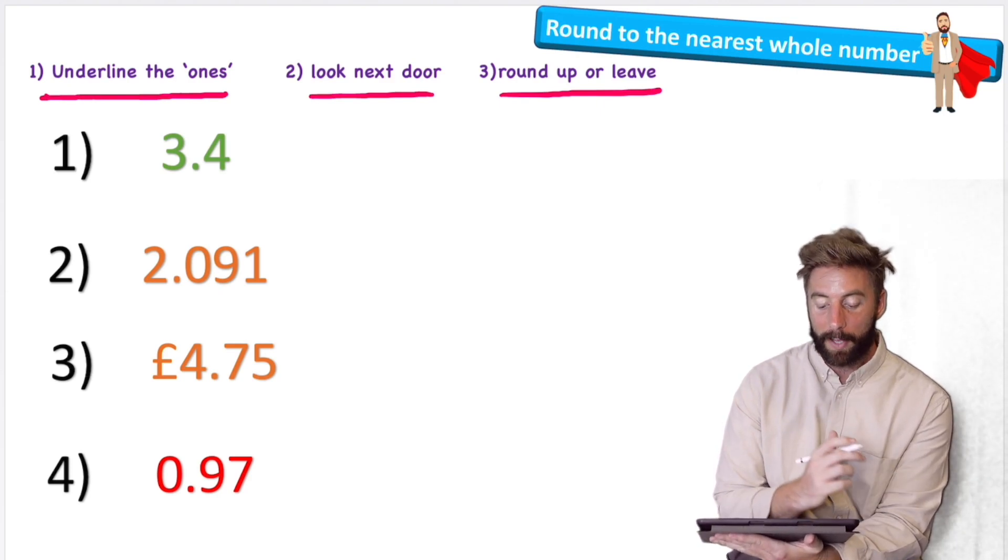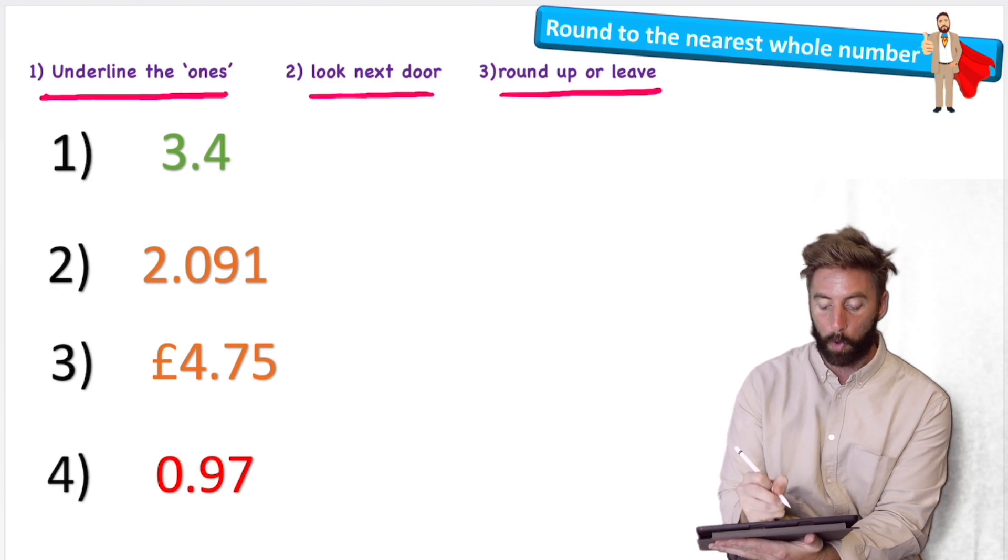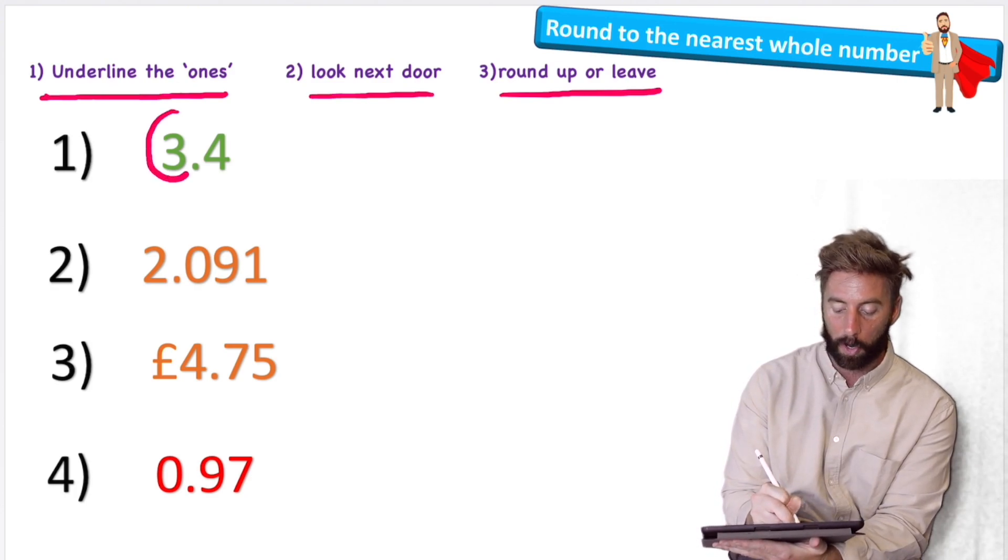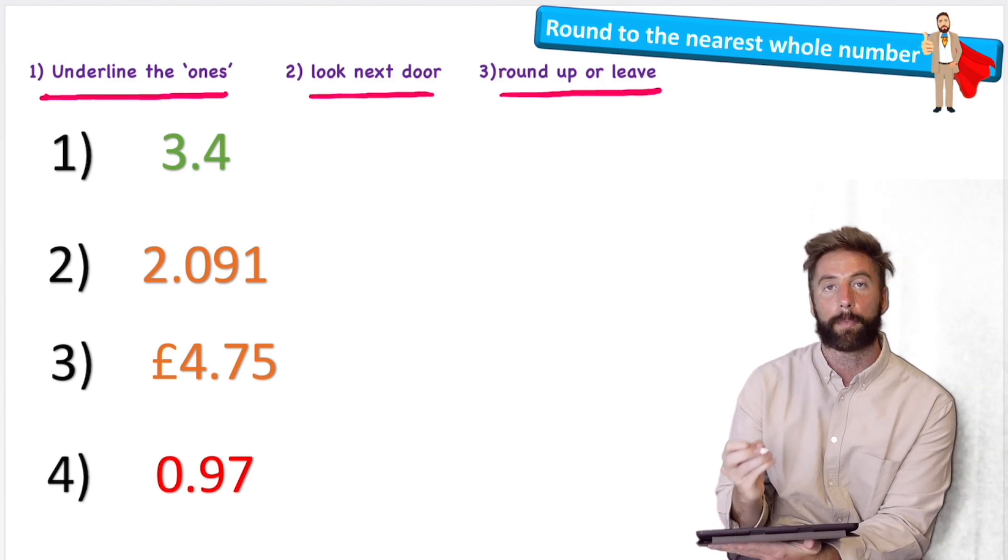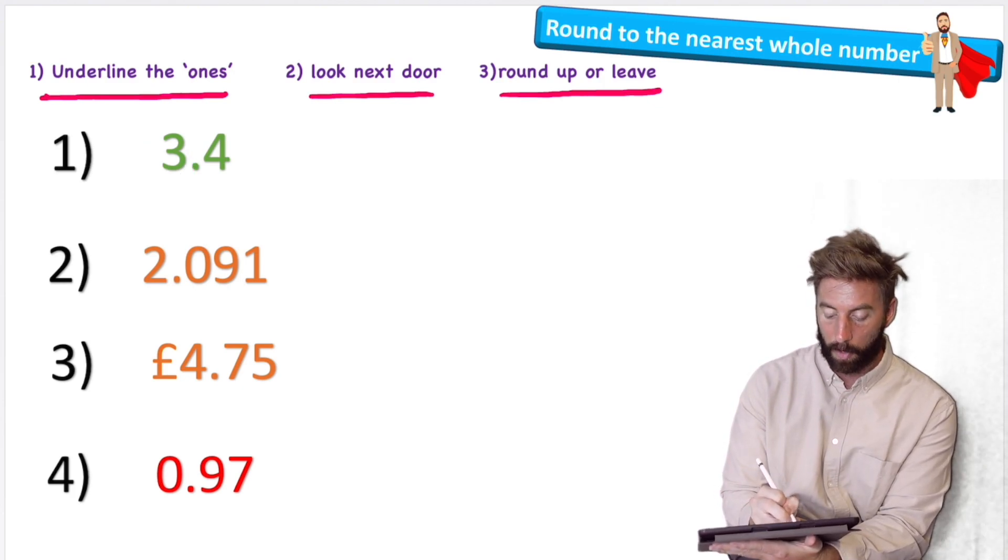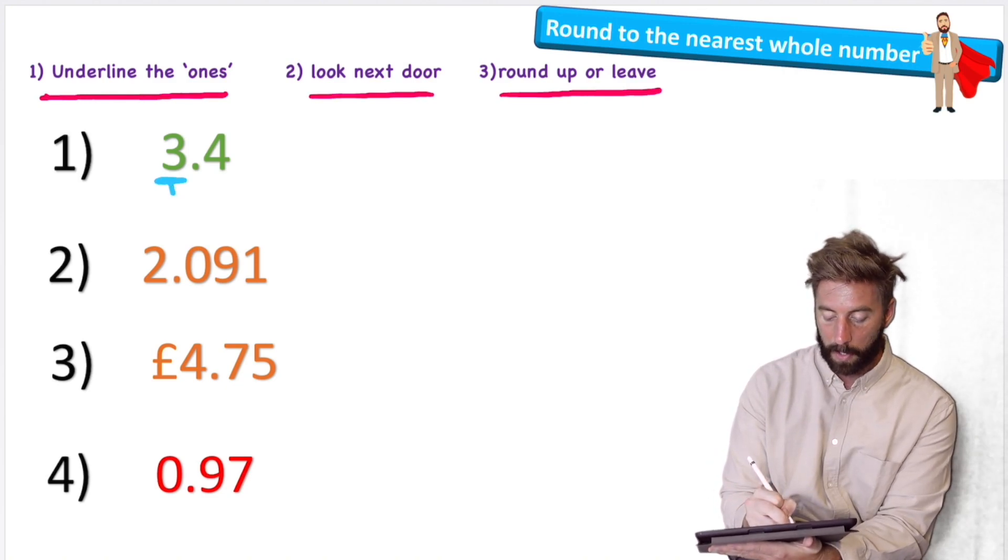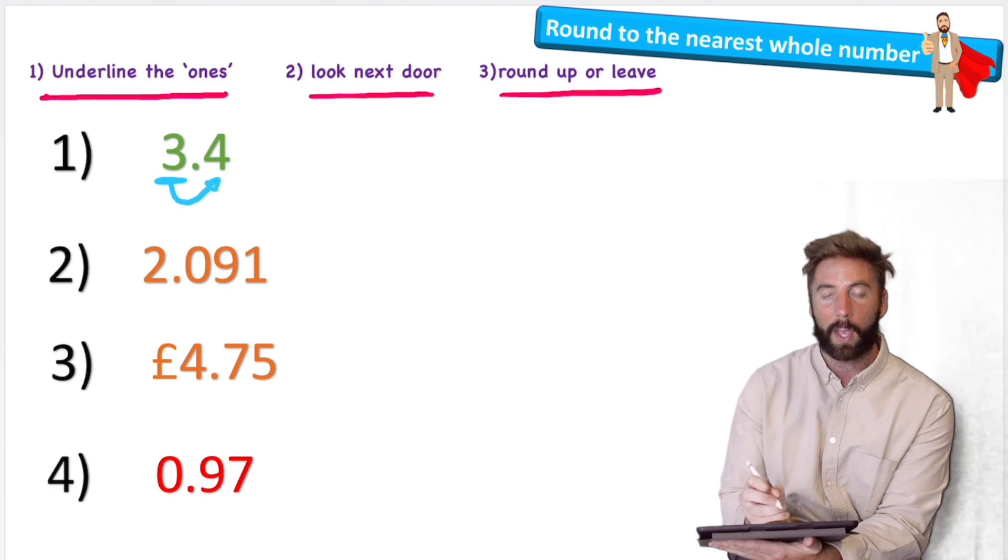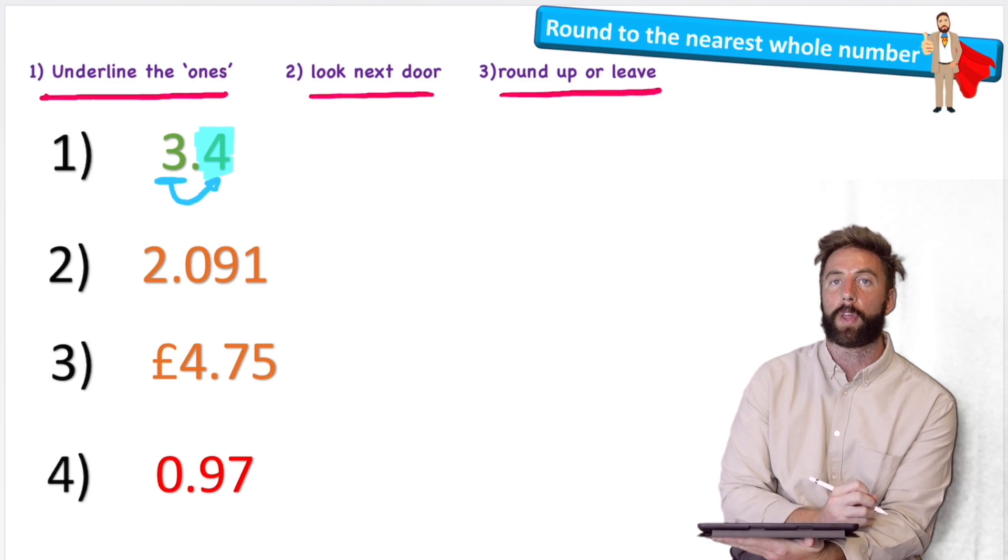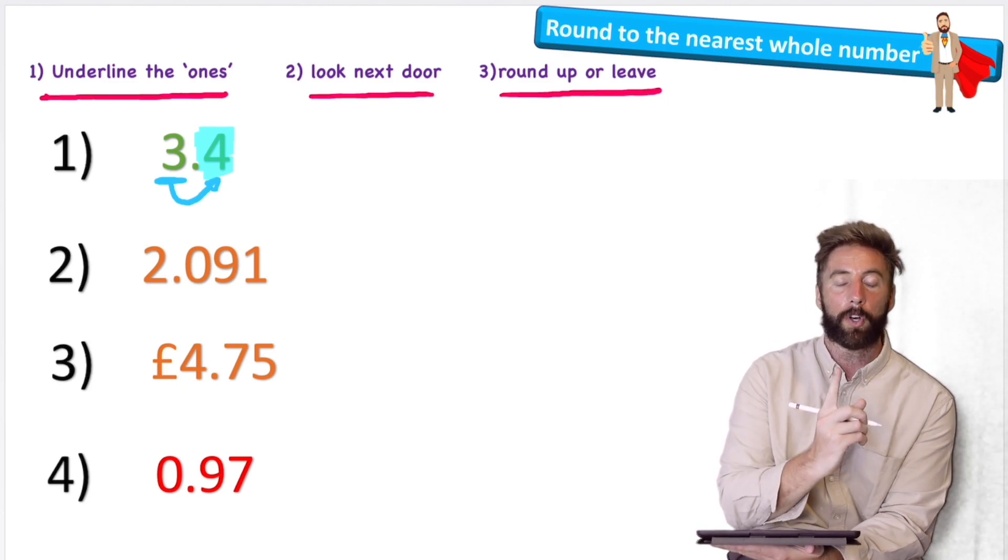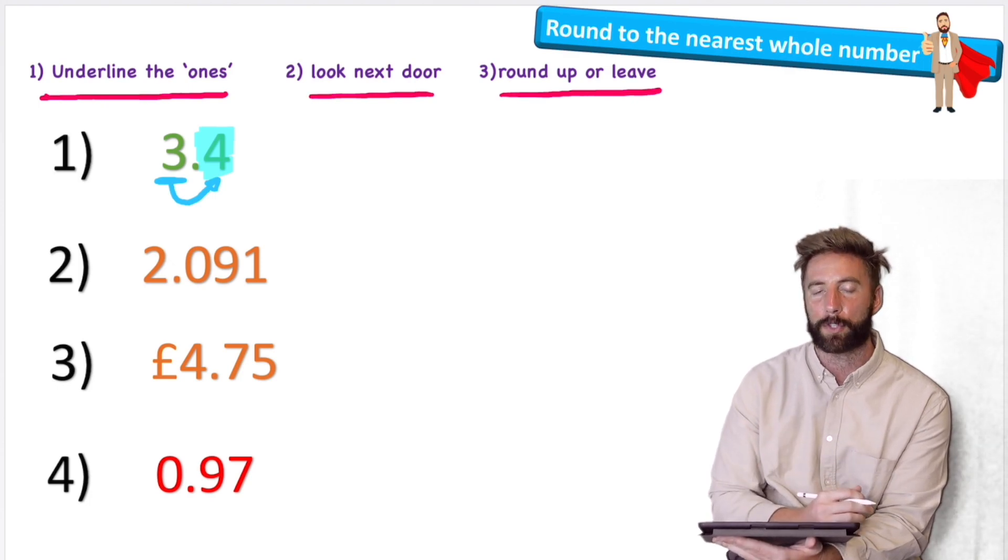So what do I mean by that? Well, if we're rounding to the nearest whole number, the nearest whole number will always be in the ones column. And the ones column is the number next to the decimal point, to the left of the decimal. So my first step said underline the number in the ones column. And then I'm simply going to look next door and I'm always going to look to the right. And I'm going to use this number, in this case a four, to influence whether I round this number up or if I keep it at the same number. And how do we know how to do that?